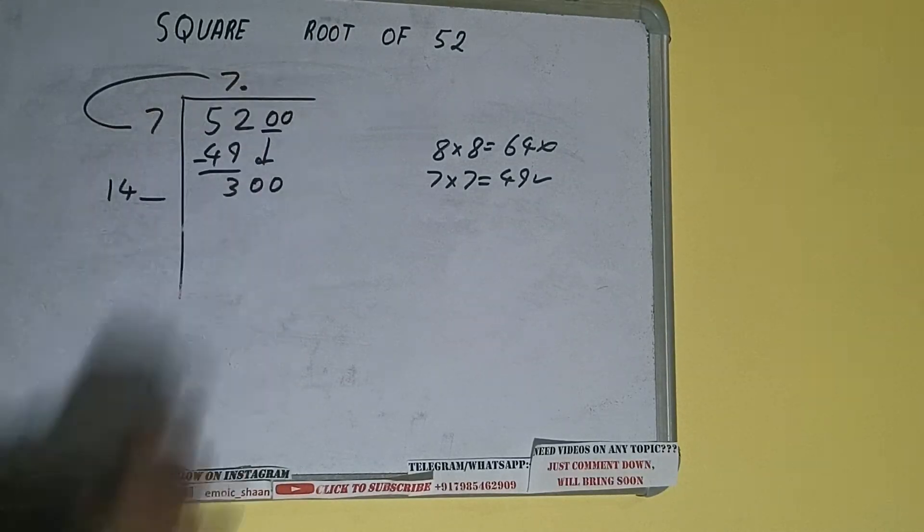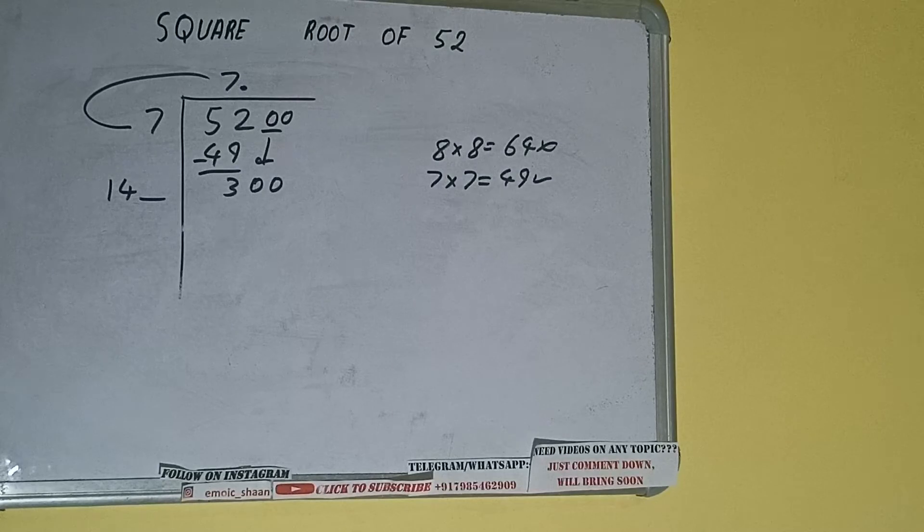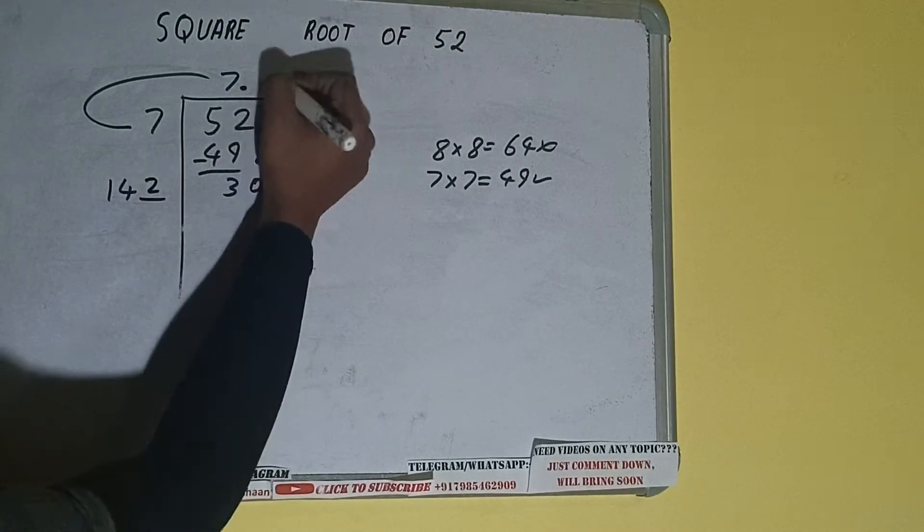And the number will become as 300. Now whatever number we write here, we have to write here also. So we can write 2 here and 2 here.